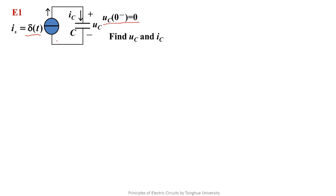The first exercise is easy. A unit impulse current source supplies electricity to a zero-state capacitor. We need to solve the capacitor's voltage and current. The voltage and current are in associated reference directions.